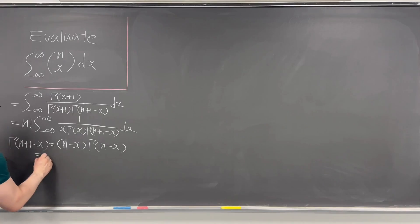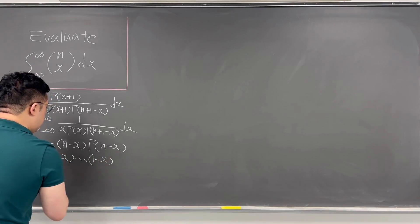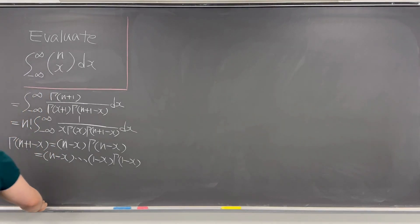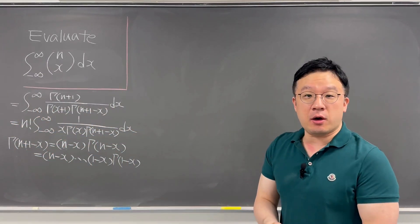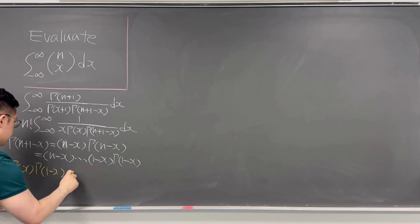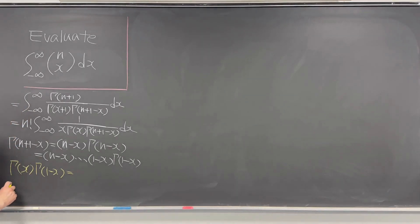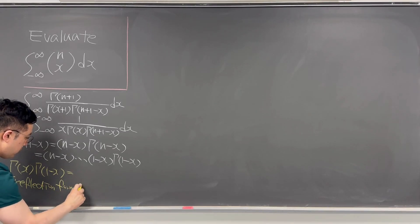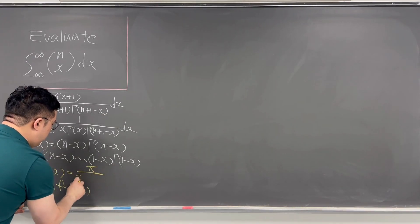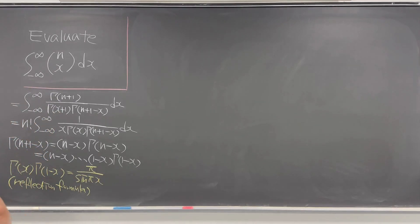That has to be the same as (n-x) times all the way down to (1-x), times gamma(1-x). Now we need to think about gamma(x) times gamma(1-x). The expression for gamma(x) times gamma(1-x), which is called the reflection formula.